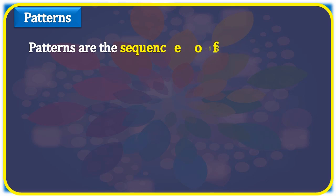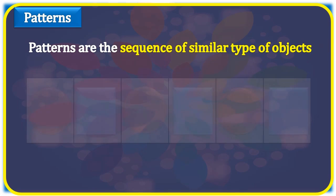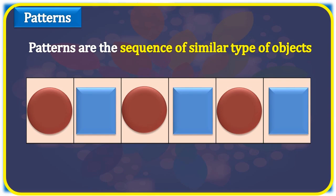Now, let us learn patterns. Patterns are the sequence of similar types of objects. Look at the following figure here. You have observed that the rectangle is followed by the circle, so it forms a pattern.